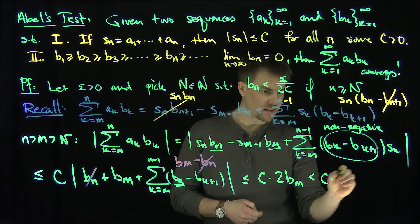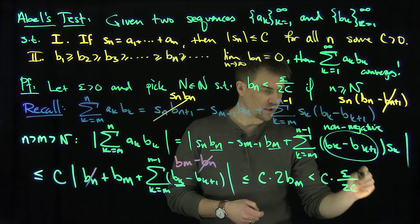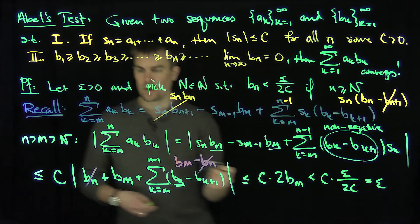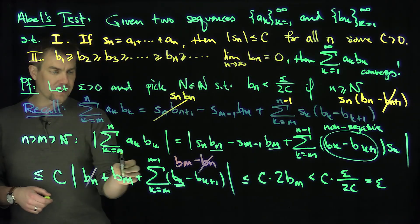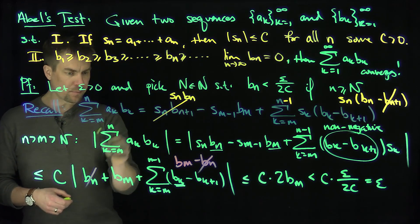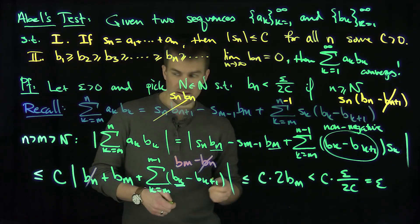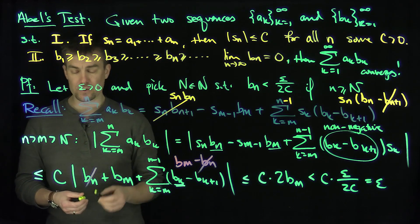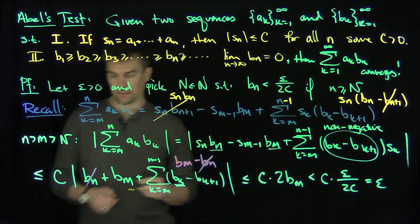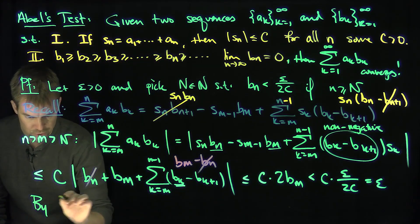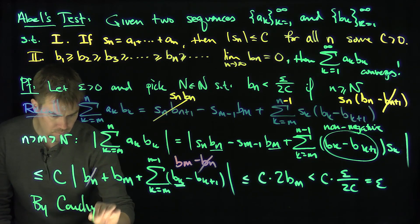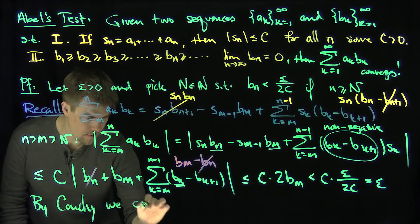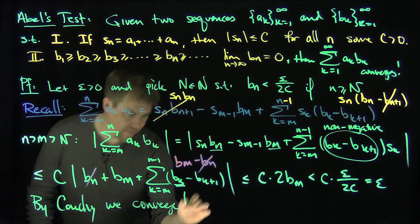But m is bigger than this value of N, so this is strictly less than c times epsilon over 2c, which is just equal to epsilon. So for m and n bigger than or equal to N, these partial sums are less than epsilon. That proves this series is a Cauchy sequence. By the Cauchy criterion, the series converges. And that's the end of the proof.